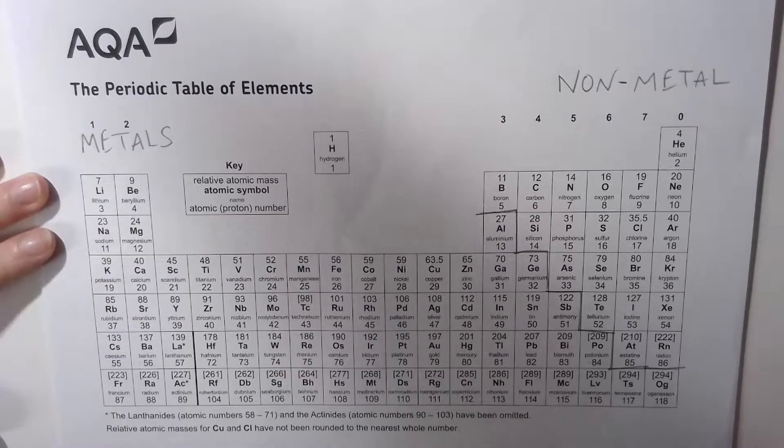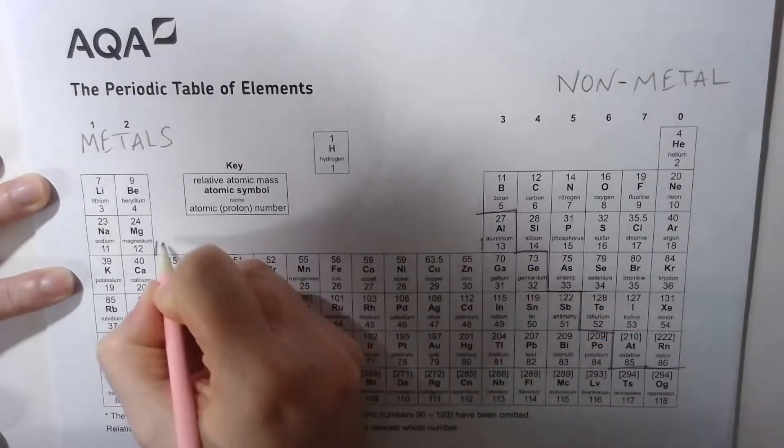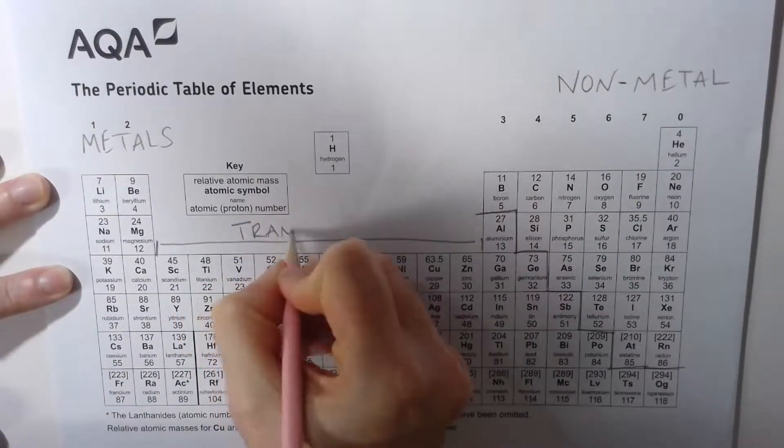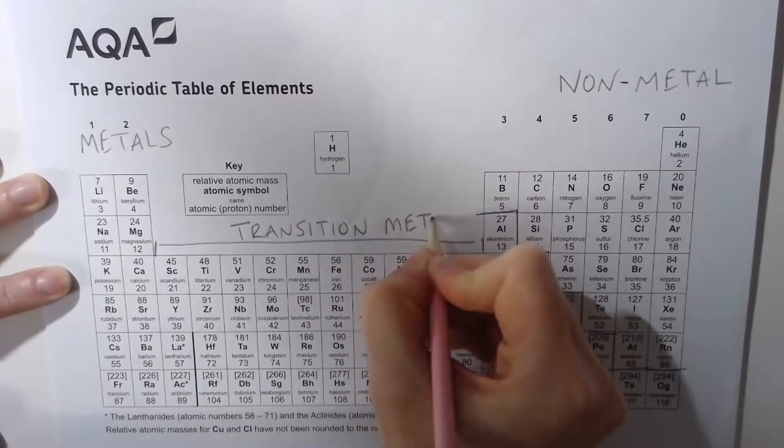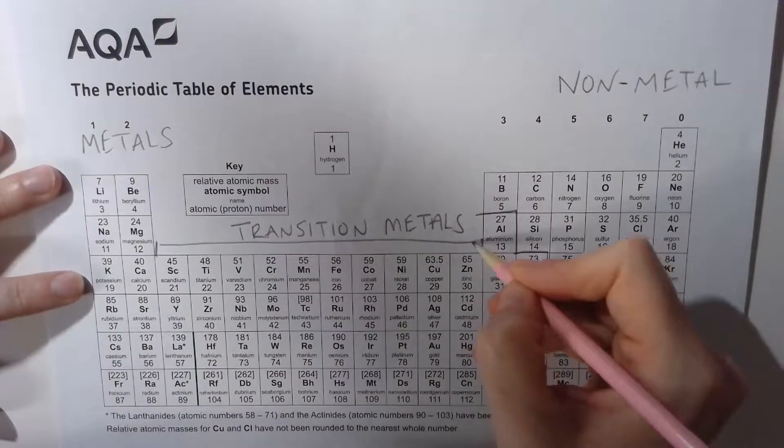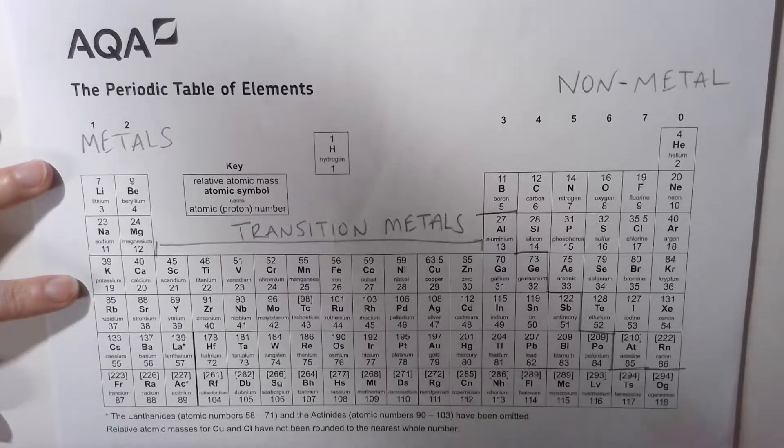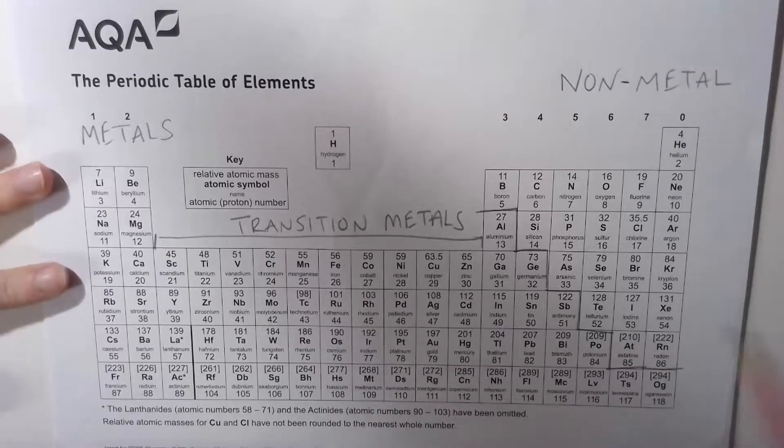We also have to look at this middle section, which are called the transition metals. These metals when burnt will be very different colors, and their ionic compounds can be different. For example, iron can be iron two or iron three. They are not set like the other groups in the periodic table.